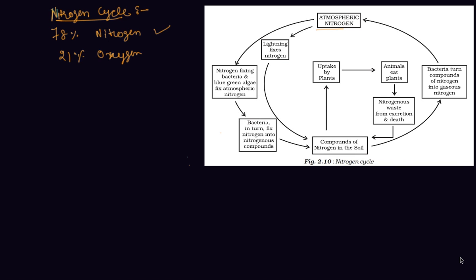The atmospheric Nitrogen cannot be taken directly by plants and animals. Certain bacteria and blue-green algae present in the soil fix Nitrogen from the atmosphere and convert it into compounds of Nitrogen. Once Nitrogen is converted into these usable compounds, it can be utilized by plants from the soil through their roots.